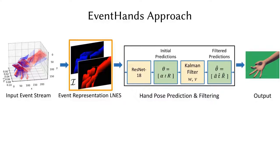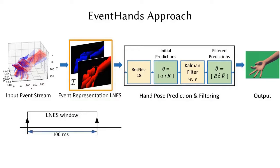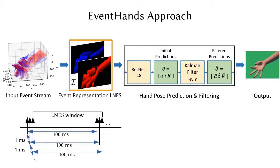In contrast to naive images of collapsed events, such as event frames or event count images, where temporal information is lost, LNES stores normalized timestamps of the two polarities in two separate channels to preserve the ordering and direction of brightness change. The length of each LNES window is 100 milliseconds, and we overlap the windows by 99 milliseconds to achieve an effective temporal resolution of 1 millisecond.